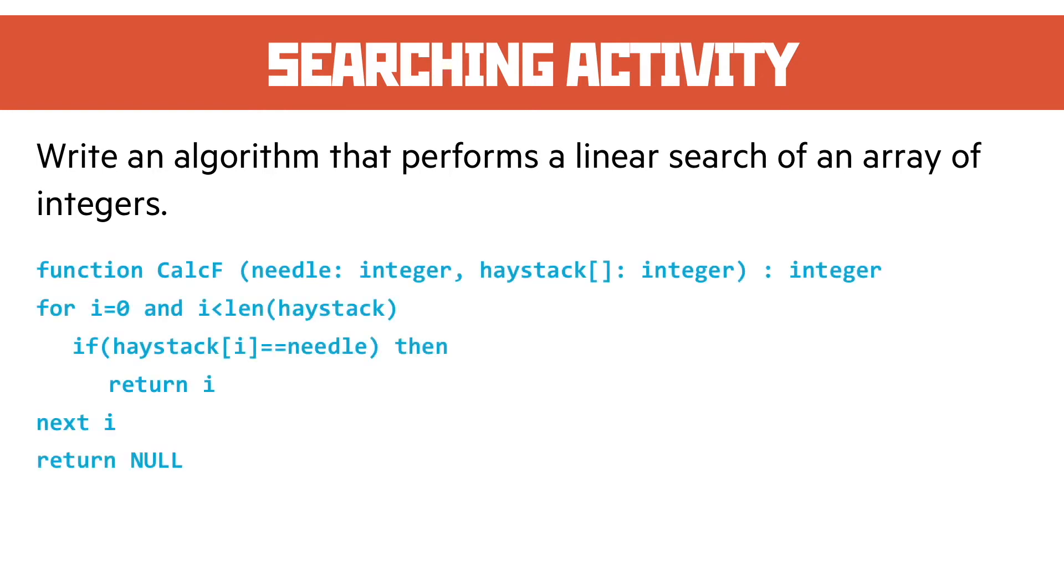A linear search is just going to go through the array from left to right or from start to finish, and it's going to compare each time to see if the value is what it's supposed to be.